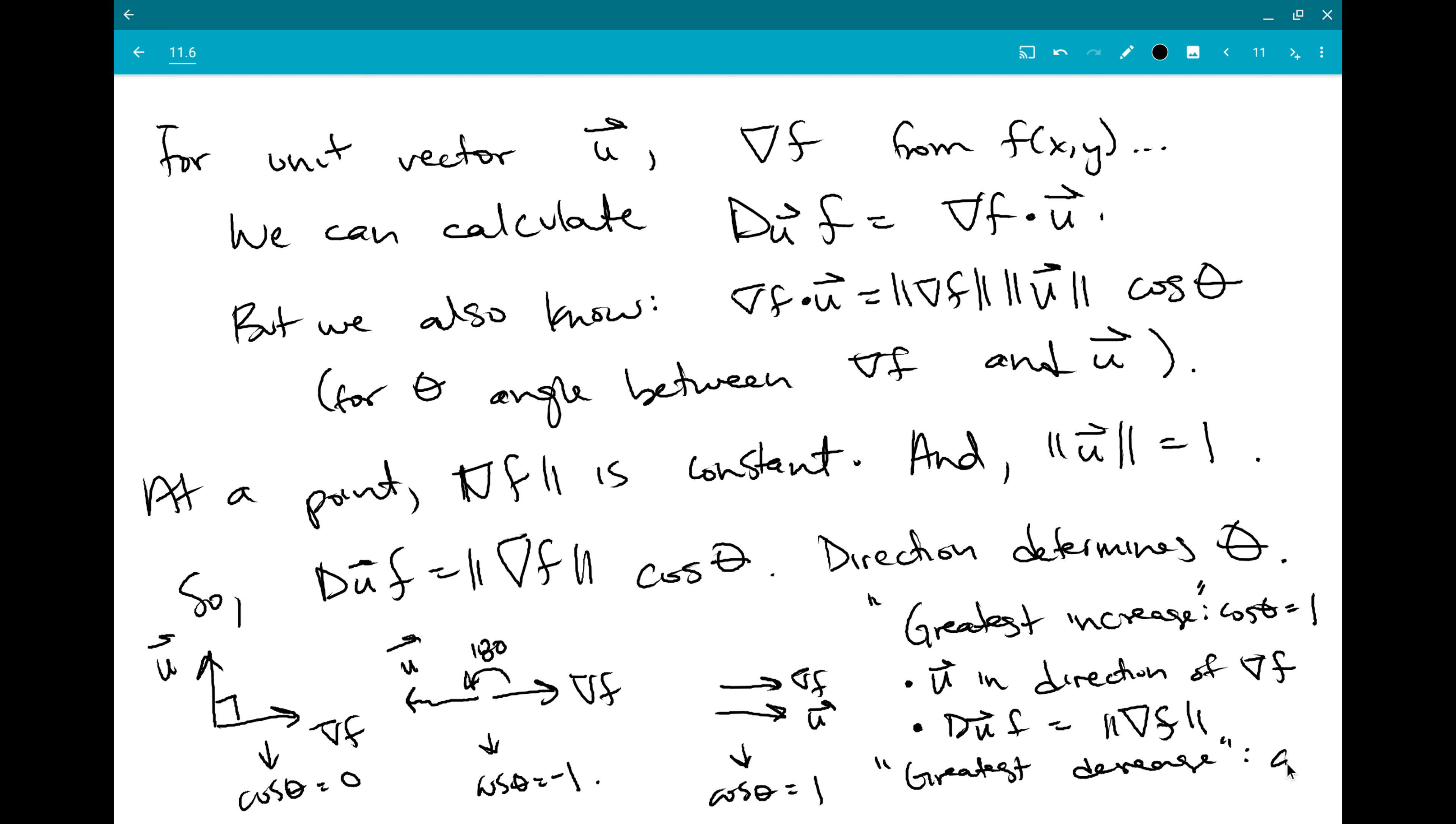And greatest decrease is just the opposite direction. Cosine theta equals minus 1. So, instead of going with grad f, you run absolutely opposite grad f. And that's just going to give you d sub u f equal to the negative of the gradient.